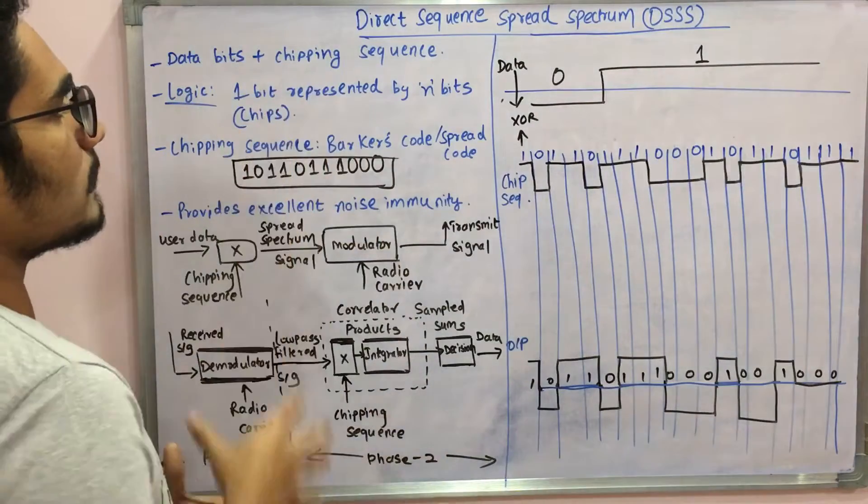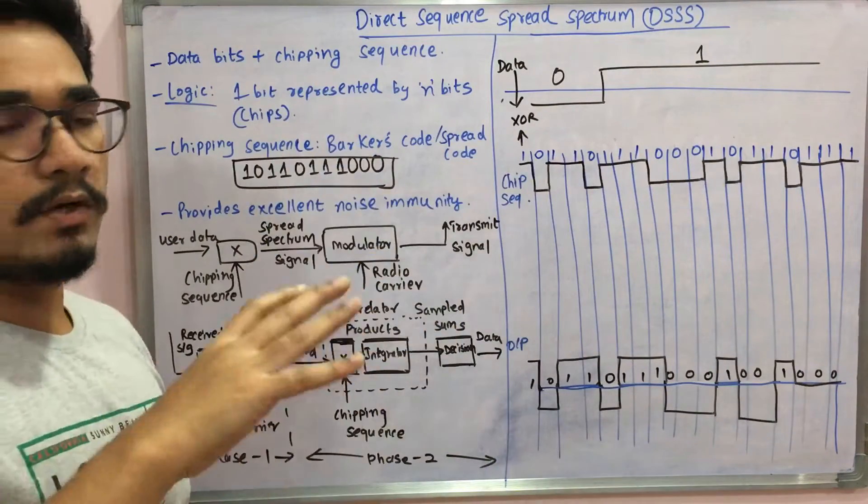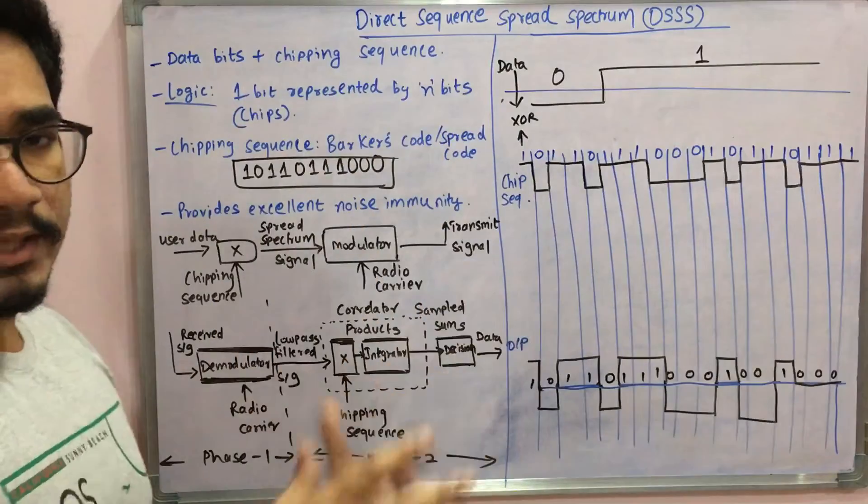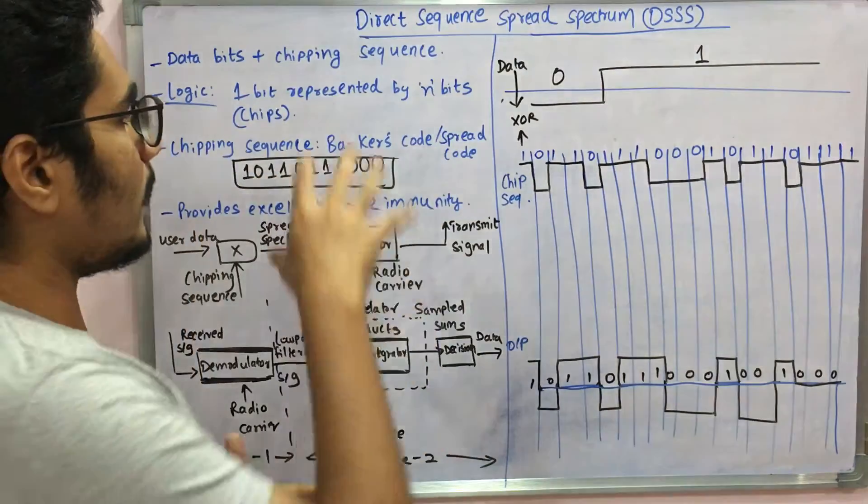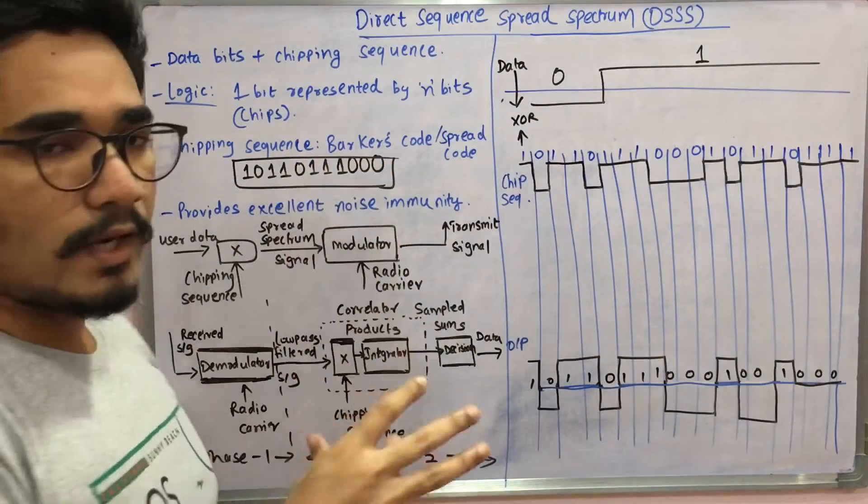N bits will constitute chips or a set of chips. The chipping sequence here is designed by a scientist called Barker, so it's called Barker code or spread code.